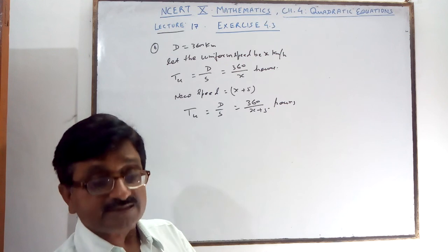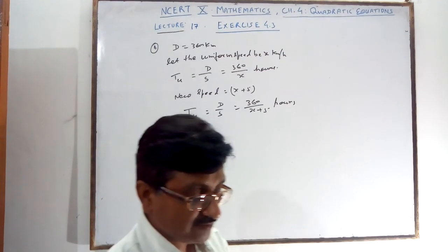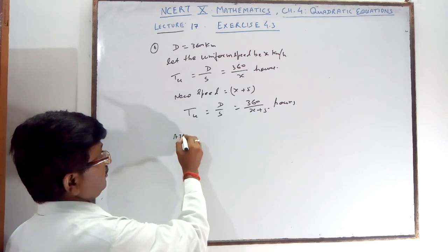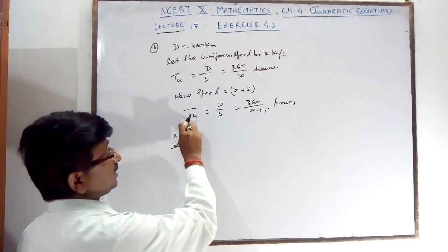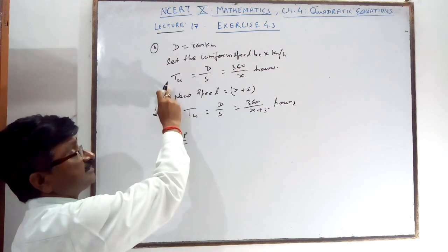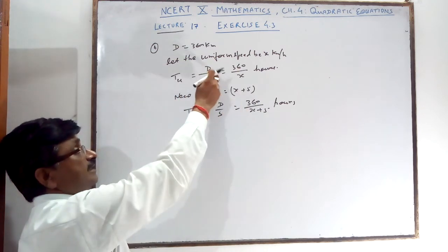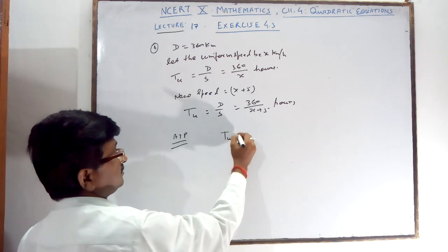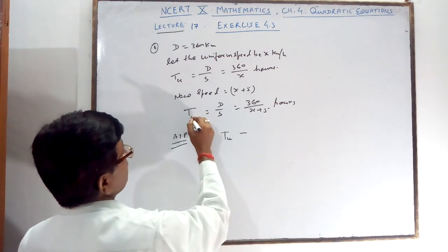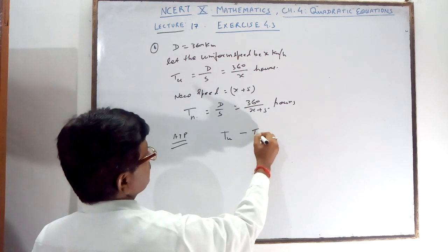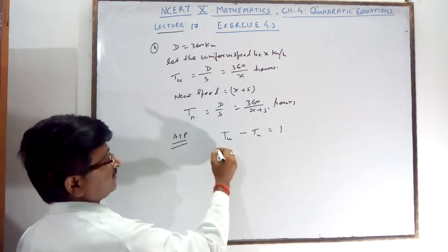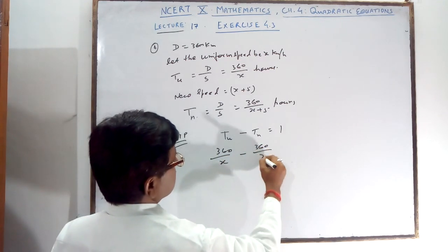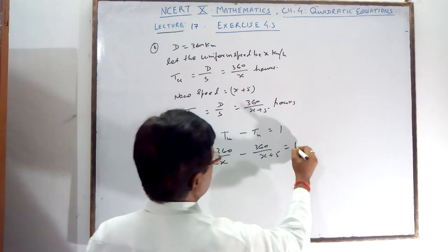It has one hour less for the same journey. So according to the problem, new time is one hour less than the previous time. The speed is more, so the time is less. Therefore, time of usual minus time of new is equal to 1 given. 360 upon x minus 360 upon x plus 5 is equal to 1.